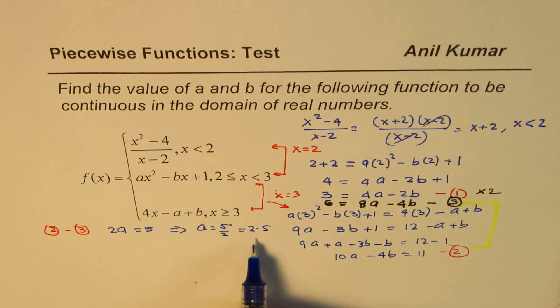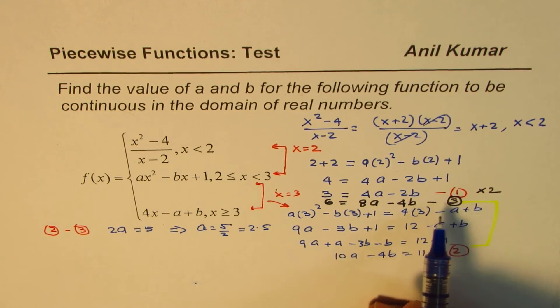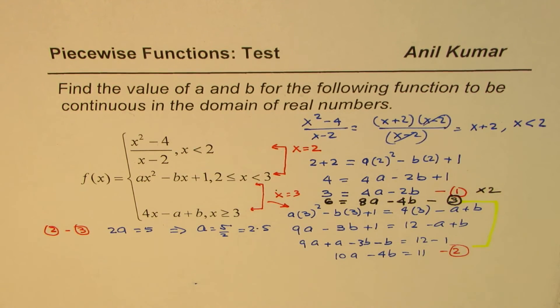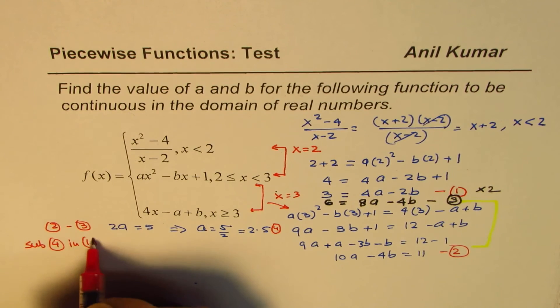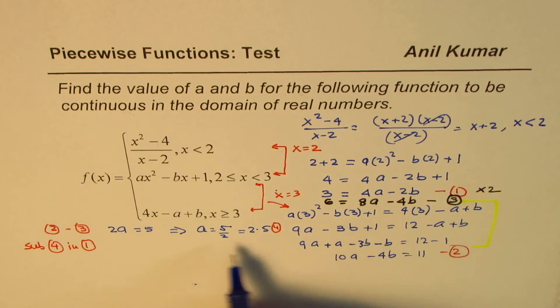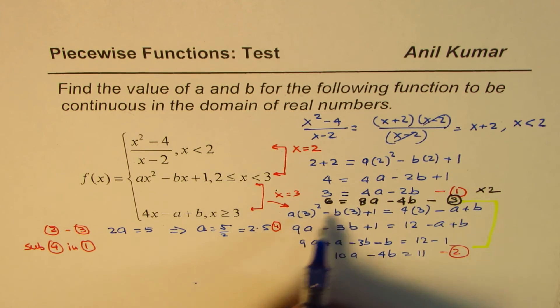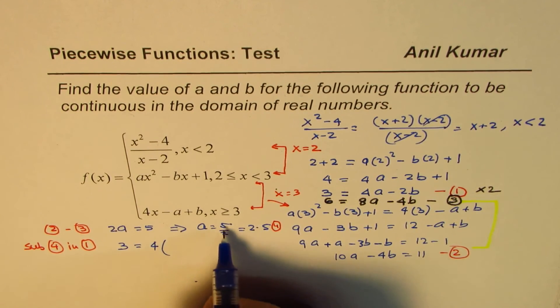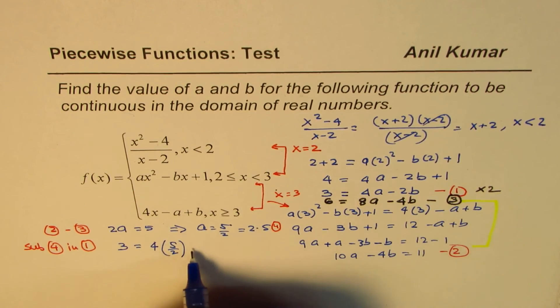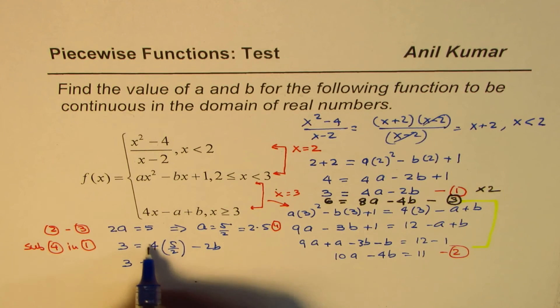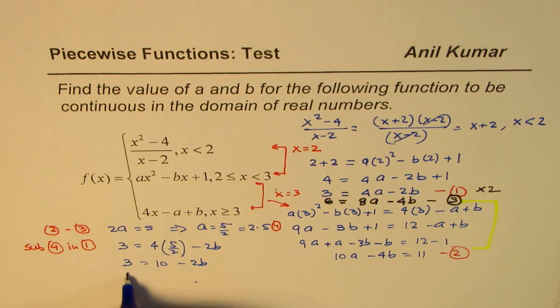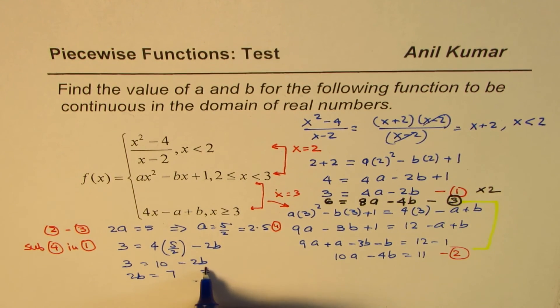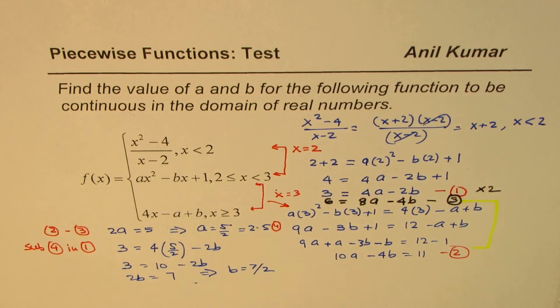So once we have a value, we can find the value of b using one of our equations. So we'll substitute 4 in 1. 4 is a value. We'll substitute this value in equation 1, which is 3 equals 4 times a values, 5 by 2 is better here, minus 2b. So we get 3 equals 5 times 2, 0 divided by 2 is 10 minus 2b. And rearranging, we get 2b equals 7, which implies b equals 7 over 2, or 3.5. So we get our answer.